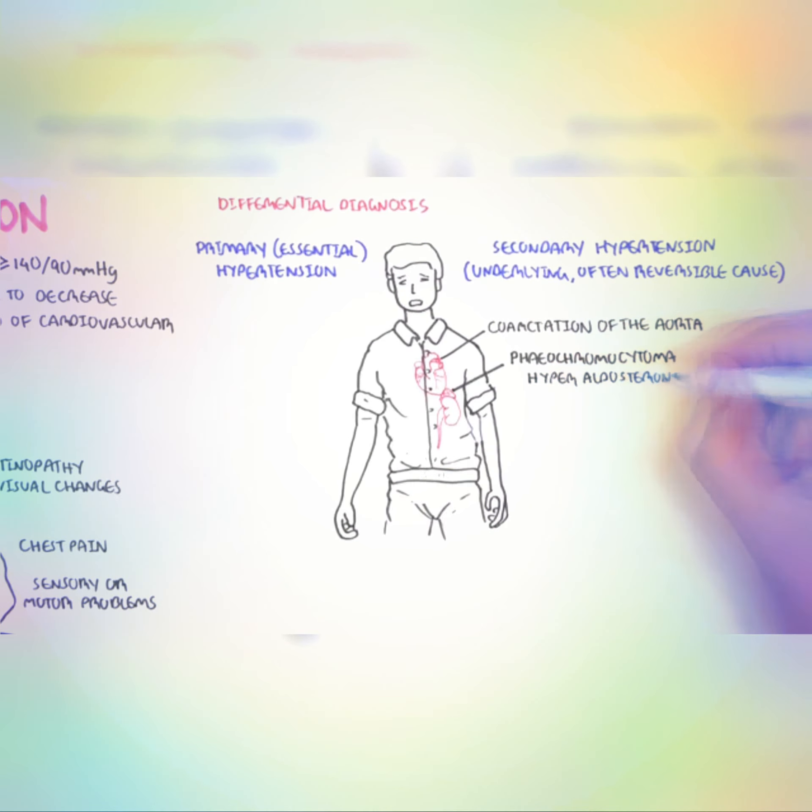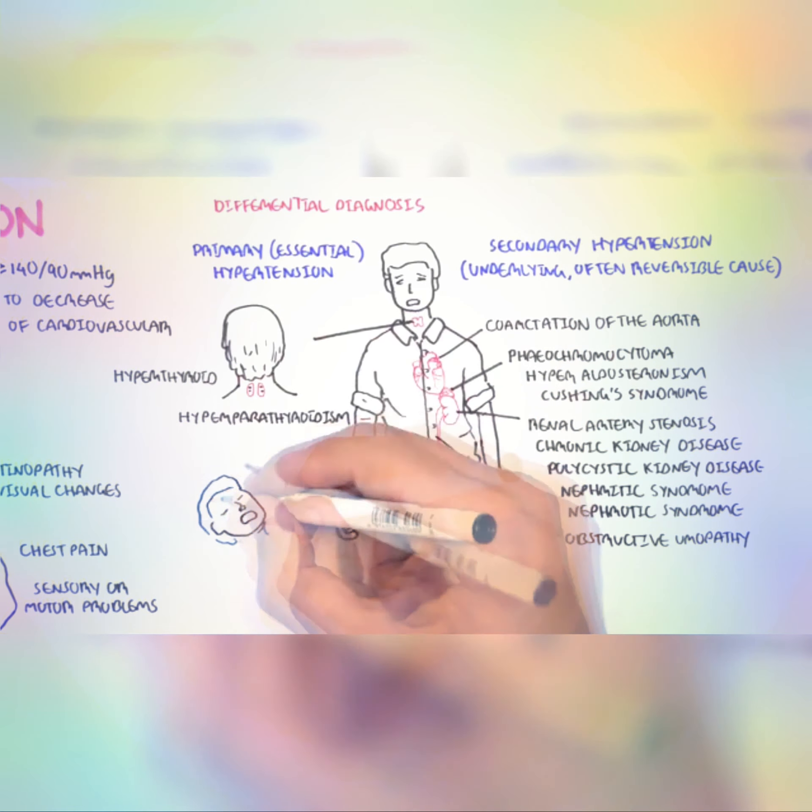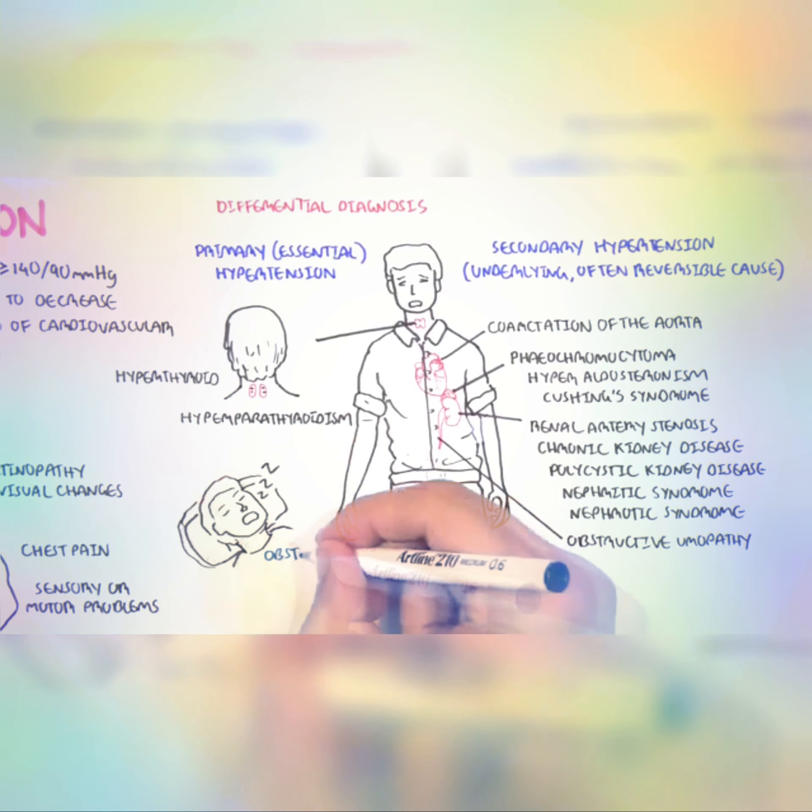Secondary causes of hypertension include coarctation of the aorta, pheochromocytoma, hyperaldosteronism, Cushing syndrome, renal artery stenosis, chronic kidney disease, polycystic kidney disease, nephritic and nephrotic syndrome.